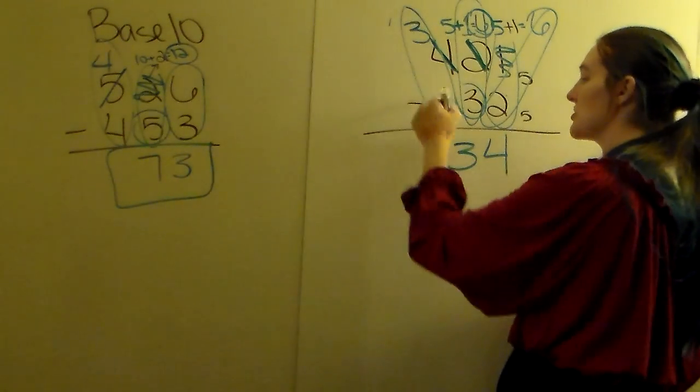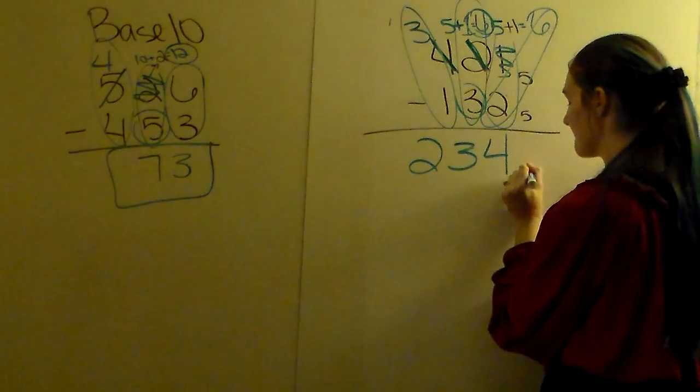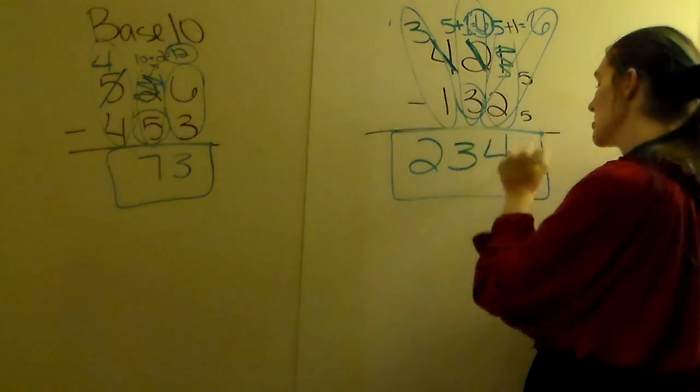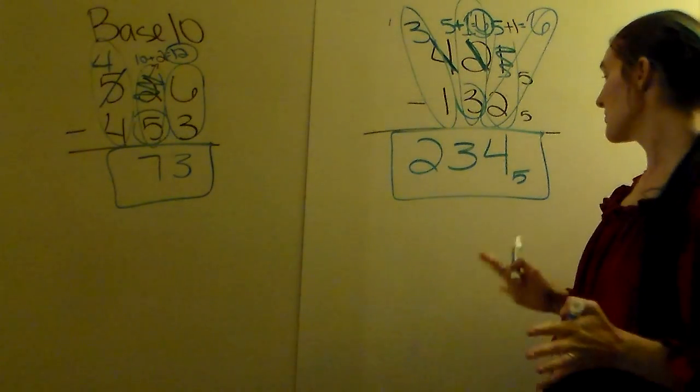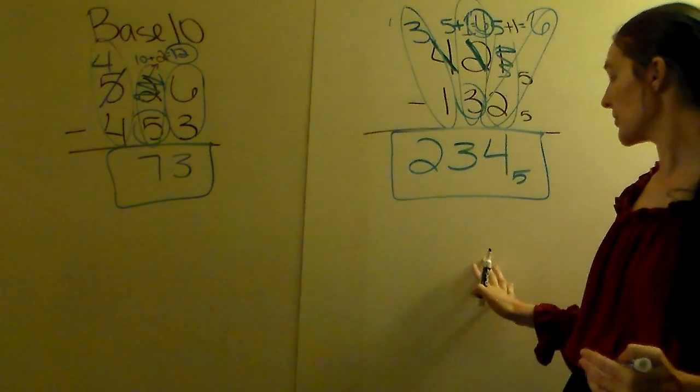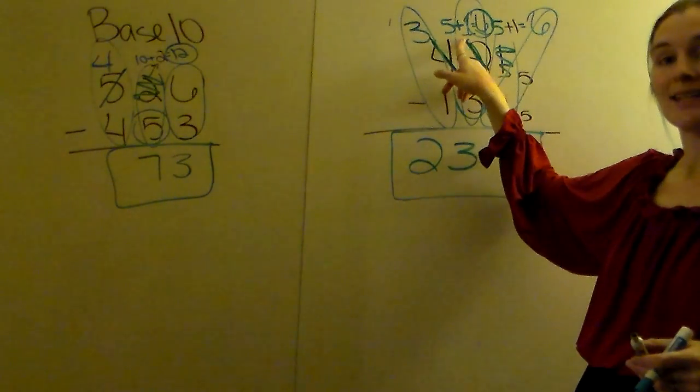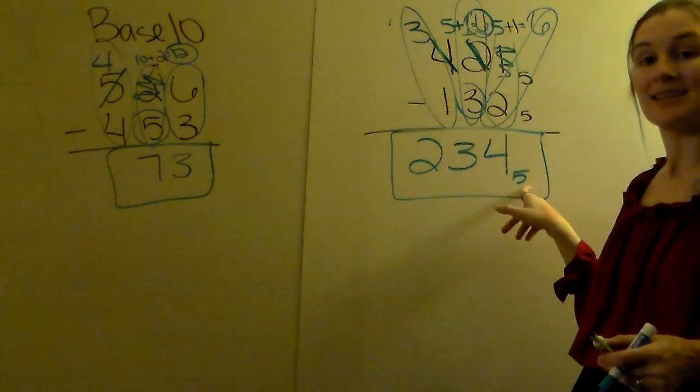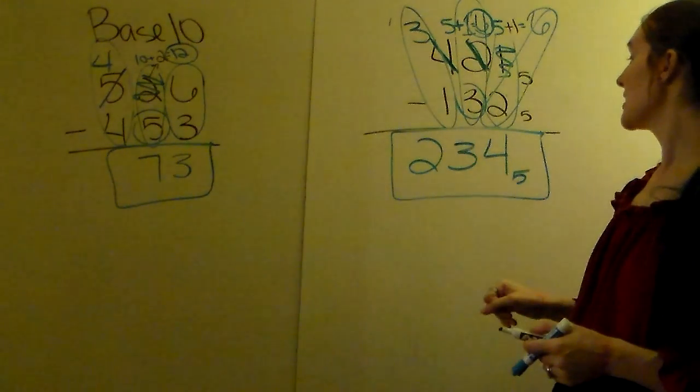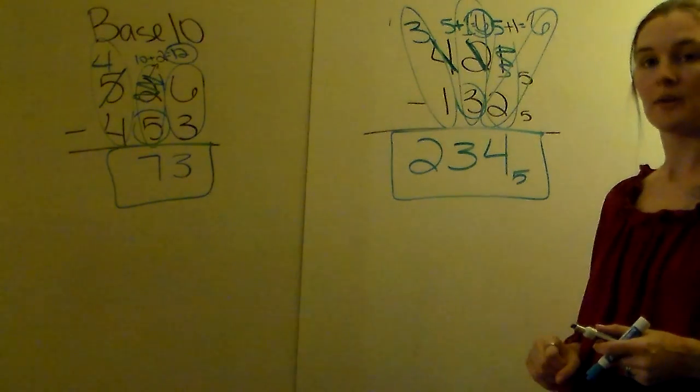Last column, 3 minus 1 gives me 2. The only thing missing is the base. You don't need to worry about whether this number is allowed in base 5, because subtracting always makes numbers smaller. The only thing to worry about is when you borrow—make sure you're adding the base. And don't forget the base notation at the end. So 421 base 5 minus 132 base 5 is 234 base 5.